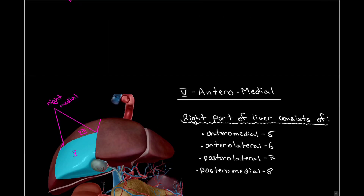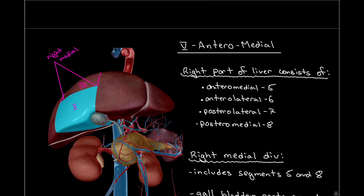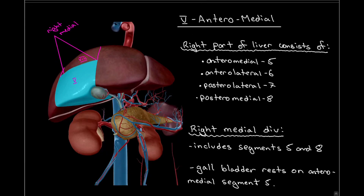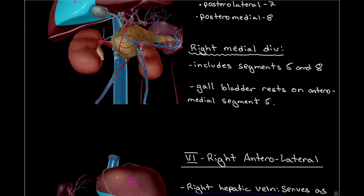Moving on to segment number five, we can see it is part of the right medial division of the liver, which includes segment number five and segment number eight. That middle hepatic vein separates the right and left hemiliver, with the right hemiliver consisting of segments number five, six, seven, and eight. The right medial division consists of segment number five and segment number eight.